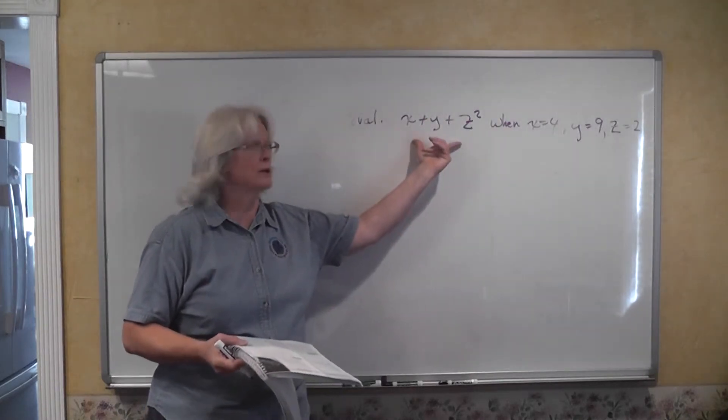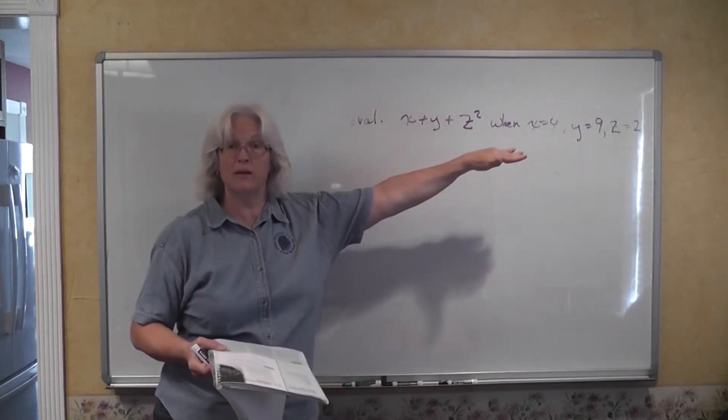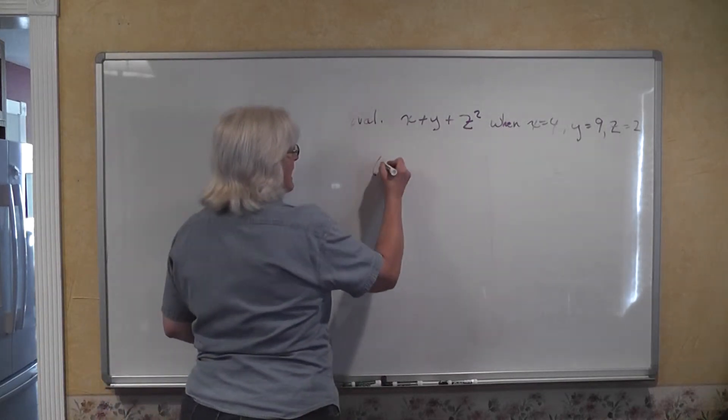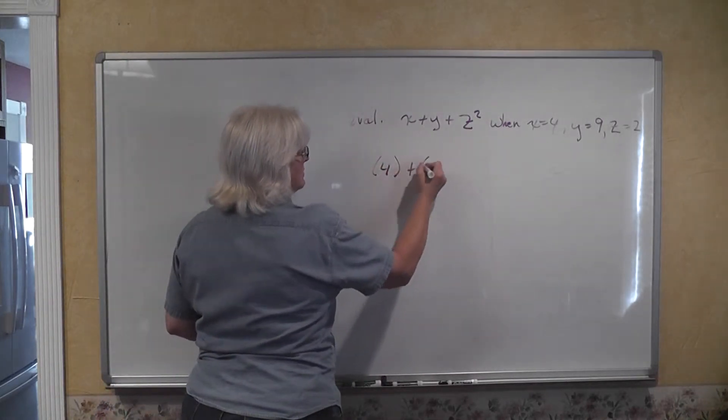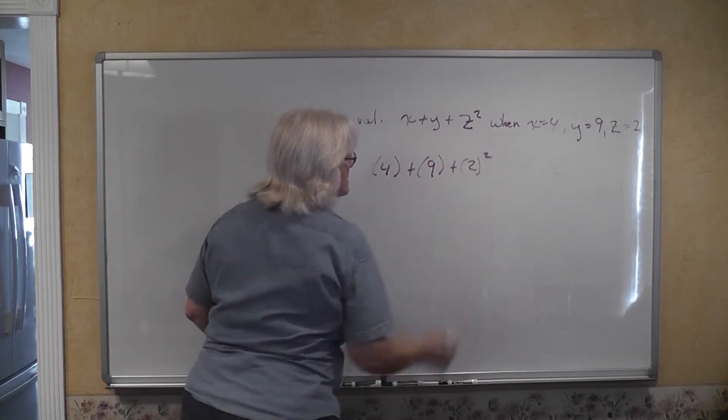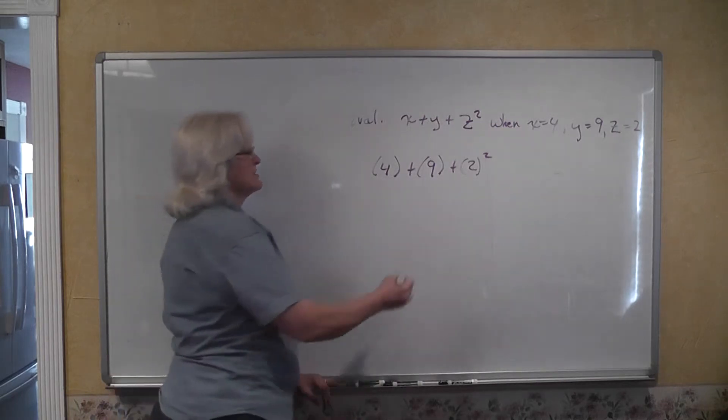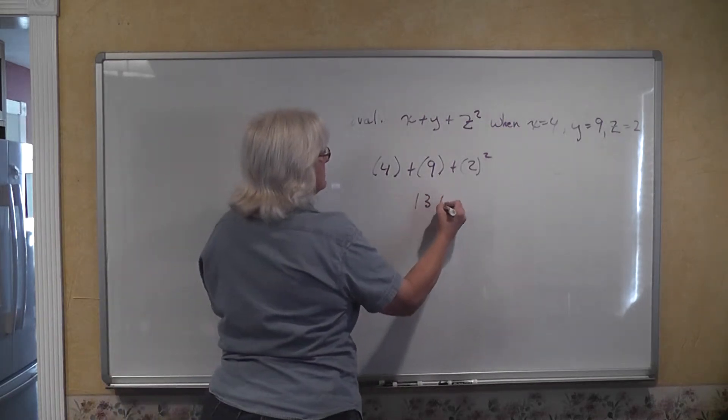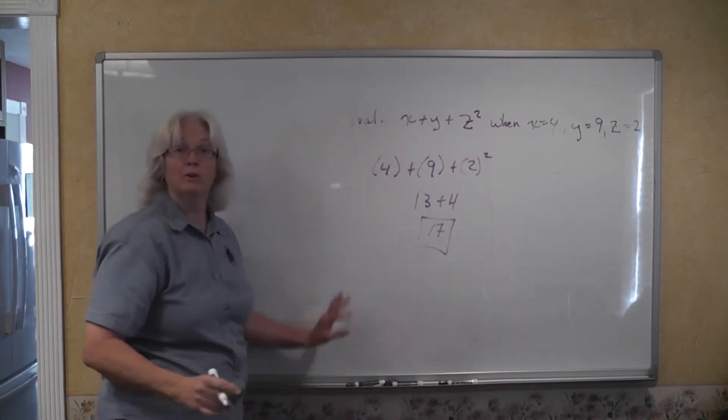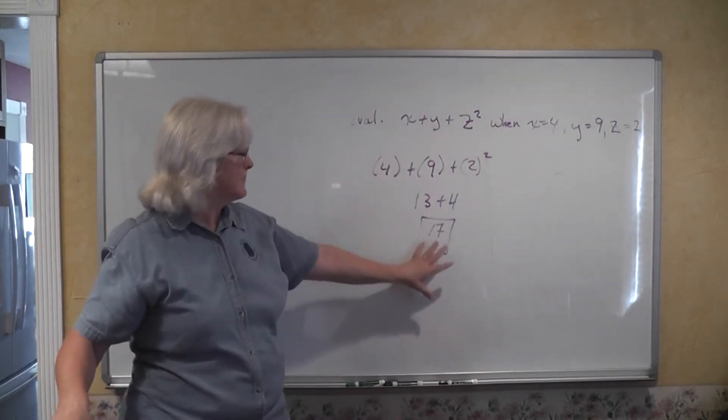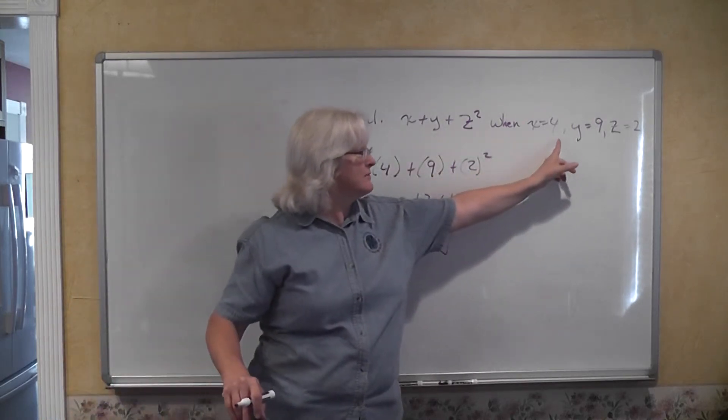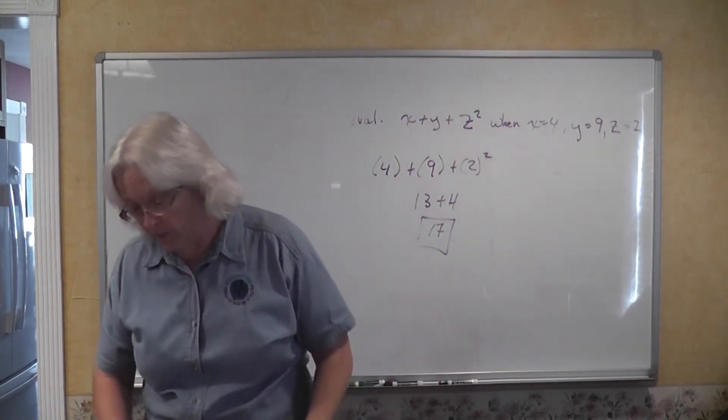Find the value for this algebraic expression when you have those assigned values given to you. First, x is 4 plus y, which is 9, plus 2, which is z squared. 4 plus 9 is 13 plus 4. The value of this expression is 17 when you have these specific numbers assigned as values of the variable.